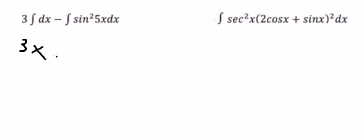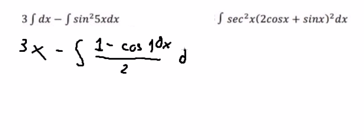The second one, we can change about 1 minus cos 10x over 2 dx. We put 1 over 2 outside. And we got about 1 minus cos 10x.